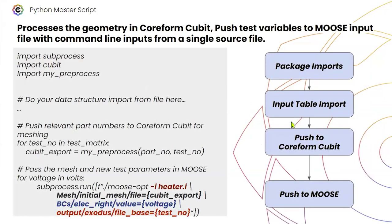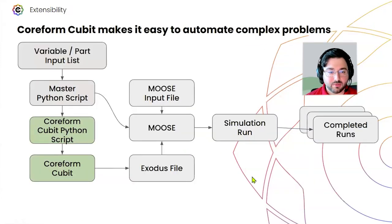This all feeds into a master Python script. It's straightforward — you import your table, push the relevant part numbers you want to assess into Cubit, and then the test number. What you get out is a Cubit export or an Exodus export named after the test number so you can keep track of it. You can also add additional Python here to add a new column to the input CSV marking your last-run solution, and then finally push this to MOOSE using command-line parameters to modify specific variables for that run.